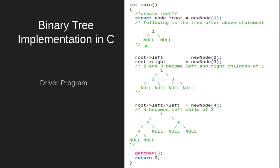Now let's see the driver program. In the main function, the first line creates a node called root by calling the newNode function and passing one as the argument. The newNode function dynamically allocates memory, initializes the data part with the argument value, and sets both left and right children to null. So this returns a node with value one, and both its left and right children pointing to null — giving us a tree with a single node.